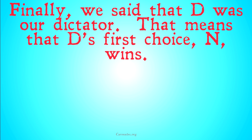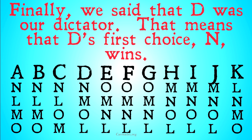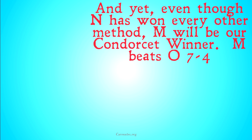And finally, as we said D was our dictator, that means D's first choice, N, wins. This is wild — all of the big systems we've looked at have picked N as our winner. And yet M is the Condorcet Winner. M will beat not only N, but every single other candidate in a one-on-one matchup.